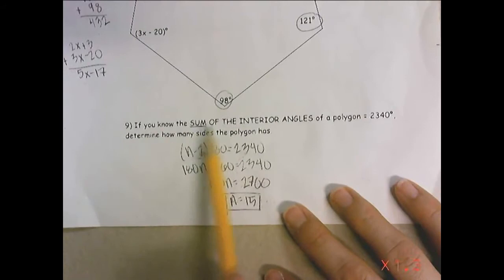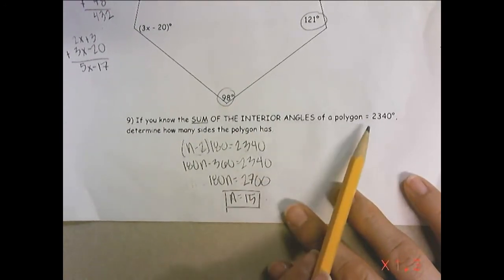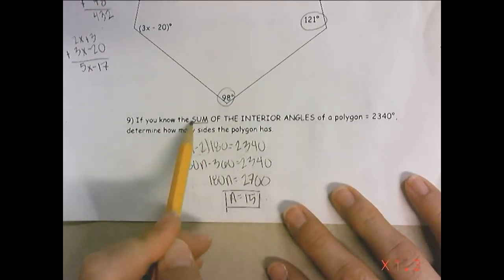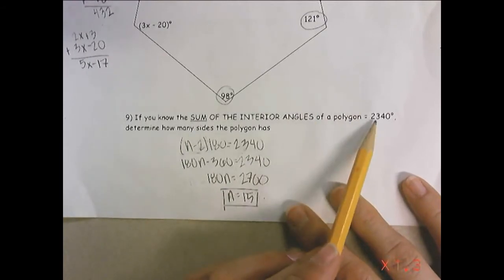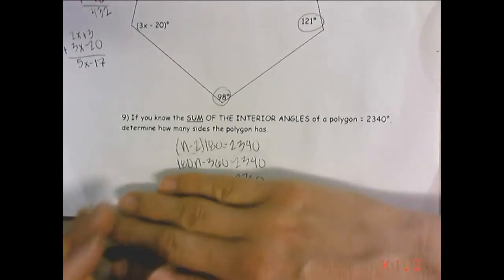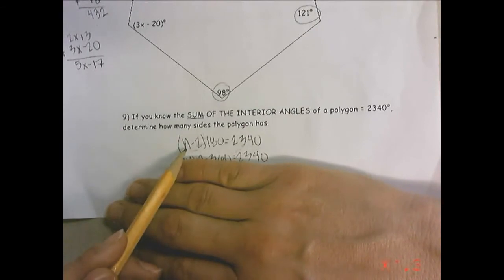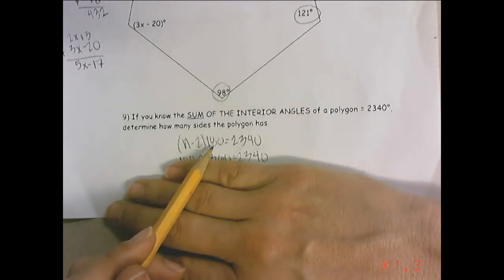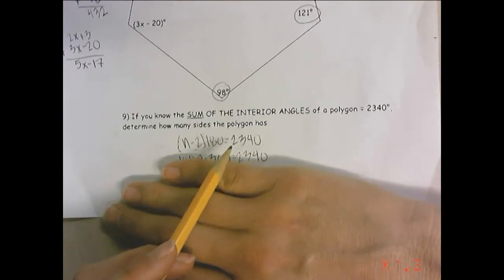Number nine. If you know the sum of interior angles of a polygon, again, the sum is 2340. Determine the number of sides the polygon has. Okay, so again, this is the total sum. So, we're going to use that formula, n minus 2 times 180, and we're going to set it equal to 2340.